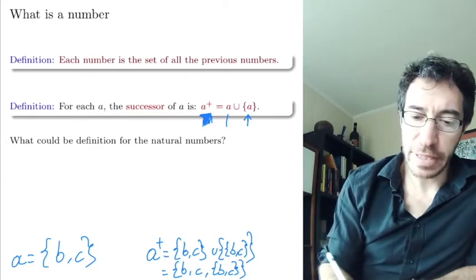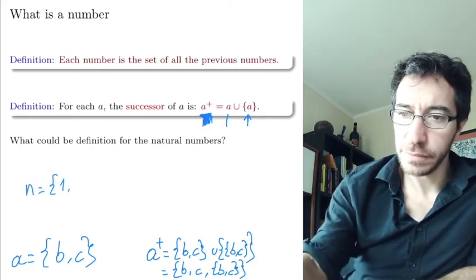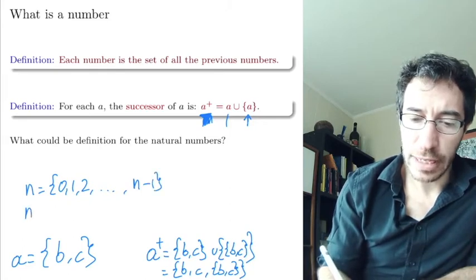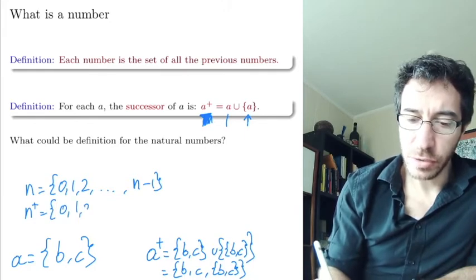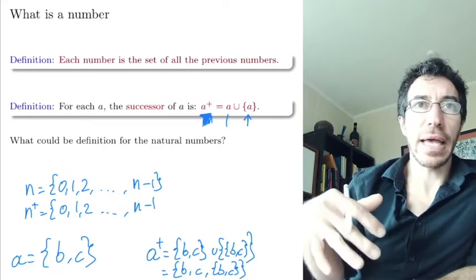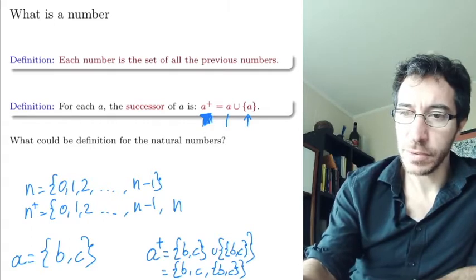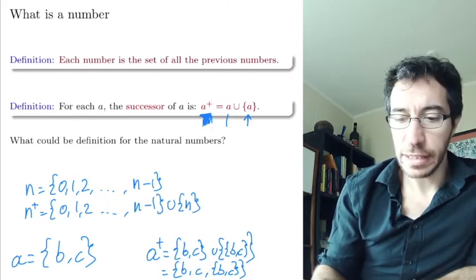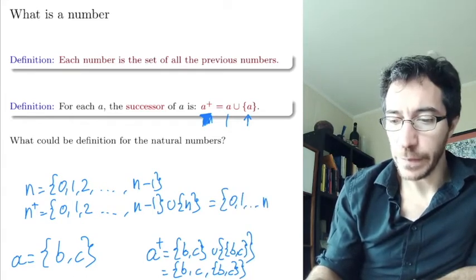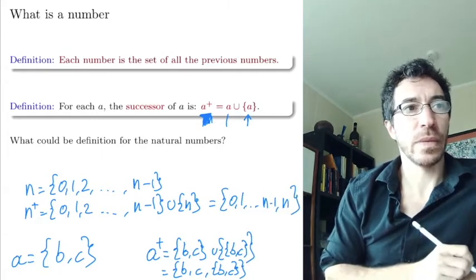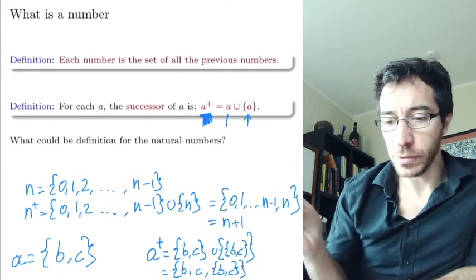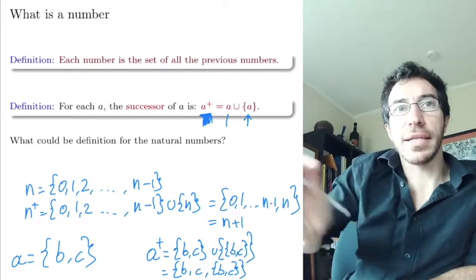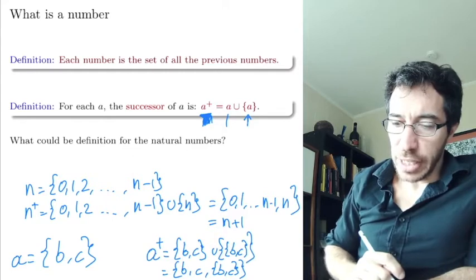So if you have a number — the set {0, 1, 2, all the way up to n minus 1} — when you do n⁺ you're going to get the set containing {0, 1, 2, all the way up to n minus 1} with n put inside. By definition that equals {0, 1, all the way to n minus 1, n}, which is exactly n plus 1. So when you have a natural number and you do this plus operation, you get essentially the next natural number.